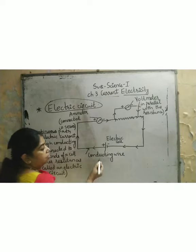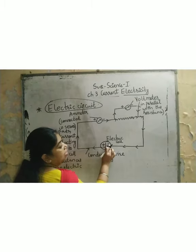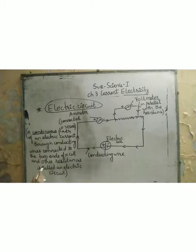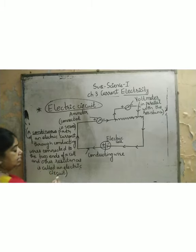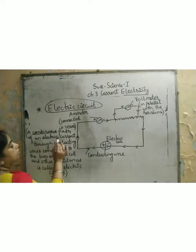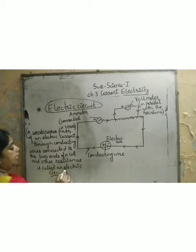Which are the two ends of the cell? One end is positive and the other is negative — this is a particular electric cell which has a positive as well as a negative charge. And other resistance connected to those ends is called an electric circuit.